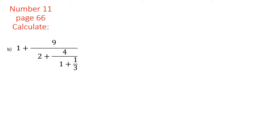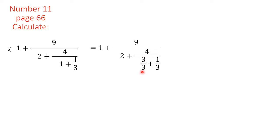Another large expression to calculate: 1 plus 9 over a lot of stuff. The numerator is already just 9, so I need to calculate and simplify the denominator into one single fraction. I always start from the bottom. So 1 plus 1 over 3: to add I need a common denominator, putting 1 as 1 over 1 and multiplying by 3 to get 3 over 3 plus 1 over 3. I copy all the other numbers as they are and only work with this part.